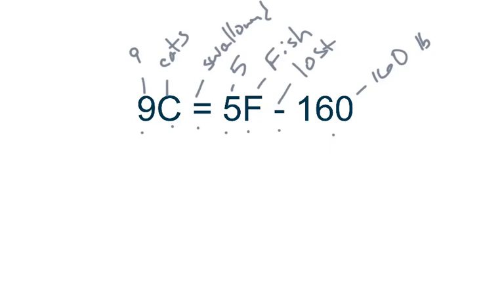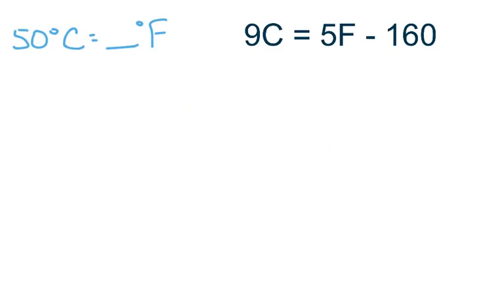So using this formula, I've got 50 degrees Celsius, but I want to know what Fahrenheit is. So I'm going to plug the 50 in where the Celsius is. So I'll get 9 times C, which is 50, equals 5F minus 160.